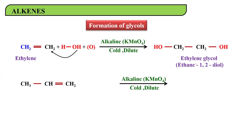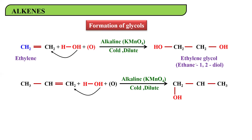Let's take another example. Because the KMnO₄ is cold and dilute, you get nascent oxygen — you can write it as OH and OH. One OH attacks one carbon giving CH₃–CH(OH)–, and then OH is also added to the adjacent carbon. You are getting two OHs on two adjacent carbon atoms — these diols are referred to as vicinal diols or glycols. The product here is propylene glycol, or propane-1,2-diol.